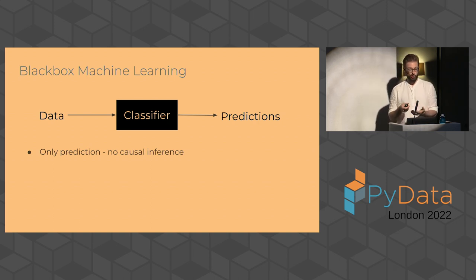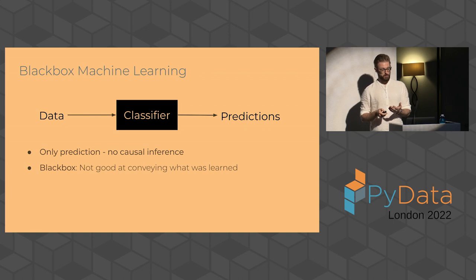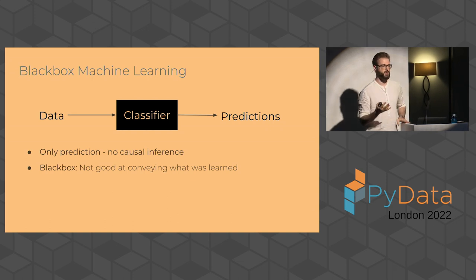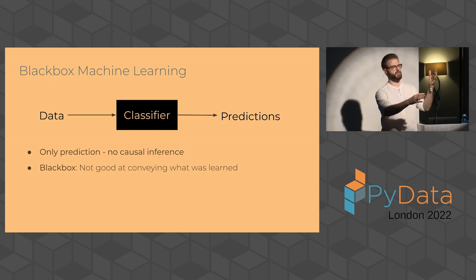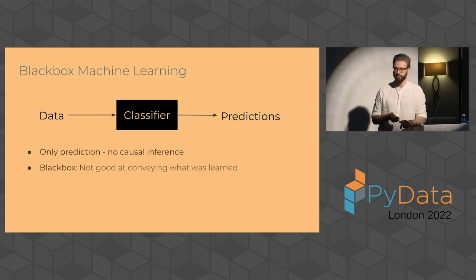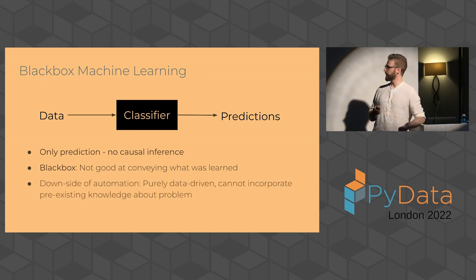But maybe we care also about understanding something in our data. Like maybe we have some knowledge about the causal structure of how my data was generated that I can't really incorporate here. So it's purely data driven and I can't really do any inference with this. And the nature that it's black box means I can't look inside. So anything that the classifier learns, it can't really communicate to me and explain to me what it has learned. So that learning is just happening in there in some crazy high dimensional space. And I can't look at it.